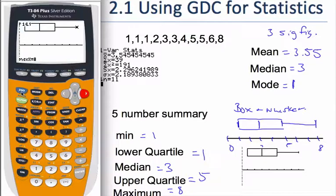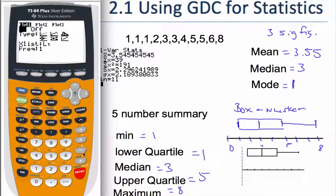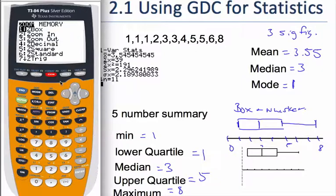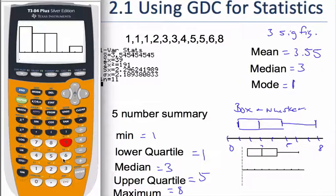All right, now the last thing our calculator will do for us, it will also draw a histogram. So if I go to stat plot again, I'm going to go to plot one. We'll just change the type of graph we want, and I go, this one is my histogram.